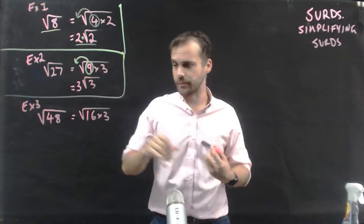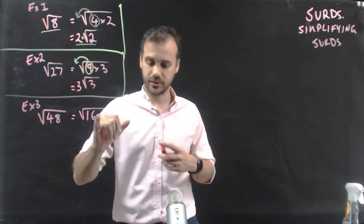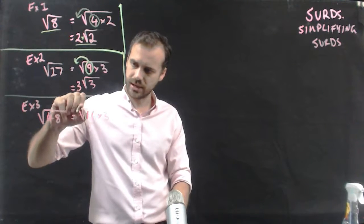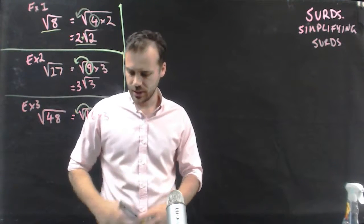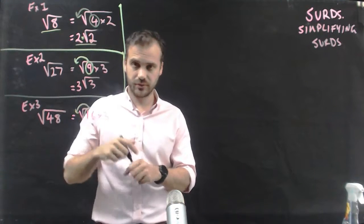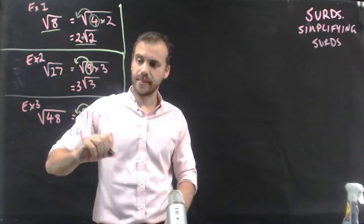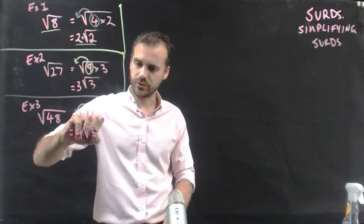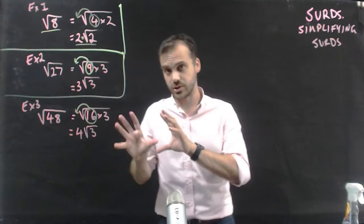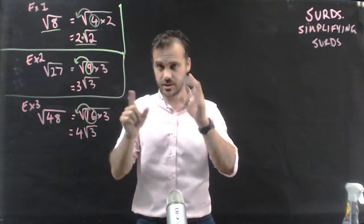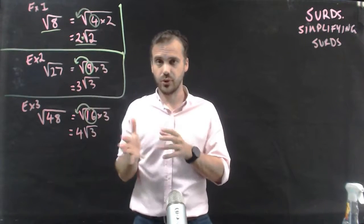Now, if you didn't come up with that, that's okay, but 16 is a square number. So, 16 is going to come outside of the square root, and when 16 comes outside of the square root, the square root of 16 is 4, and that's going to be 4 root 3.